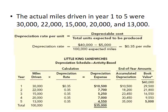Step two: calculate the depreciation schedule. In year one, 30,000 miles × $0.35 = $10,500 depreciation expense. We debit depreciation expense $10,500 and credit accumulated depreciation $10,500. We apply the same procedure for years two through five. The more we drive the truck, the more we depreciate it — that's why it's called the activity-based method.